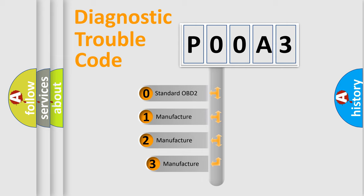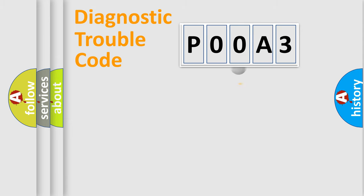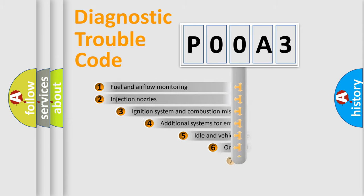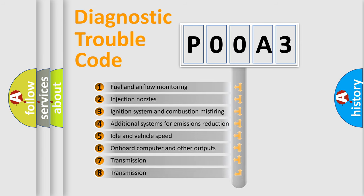If the second character is expressed as zero, it is a standardized error. In the case of numbers 1, 2, or 3, it is a manufacturer-specific error.